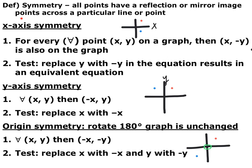The first is x-axis symmetry, which says that for every point (x, y) on a graph, then (x, negative y) also exists. So for instance, if you have a point up here in the first quadrant, then you have a reflection across the x-axis down here. Positive y and negative y for the same x value has to exist.